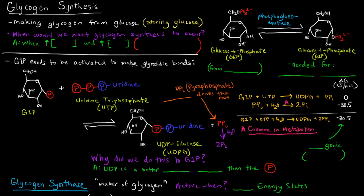In this video, it might be a little bit dense, but we're going to talk about glycogen synthesis. What is glycogen synthesis? Glycogen synthesis is making glycogen from glucose. Basically, we're storing glucose. So when would we want glycogen synthesis to occur? When would we want to store glucose?